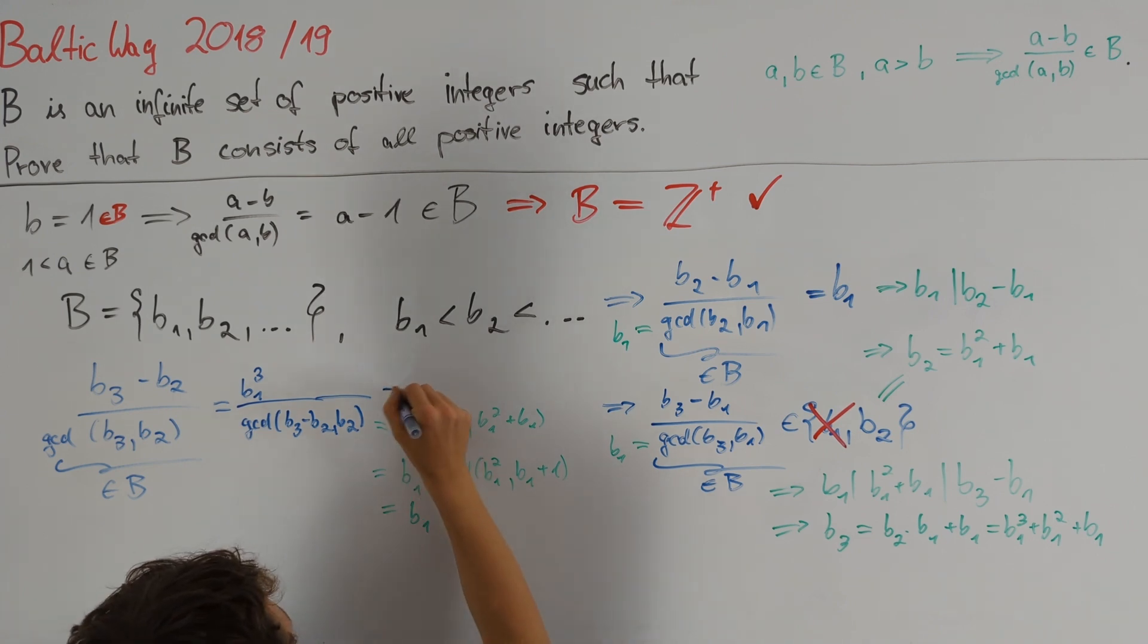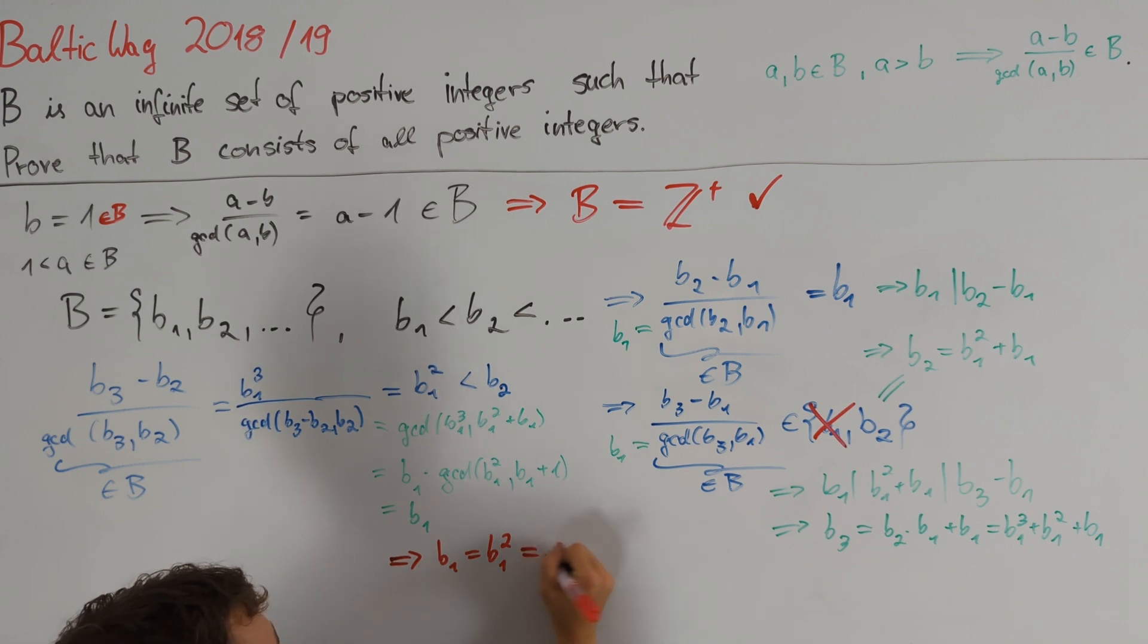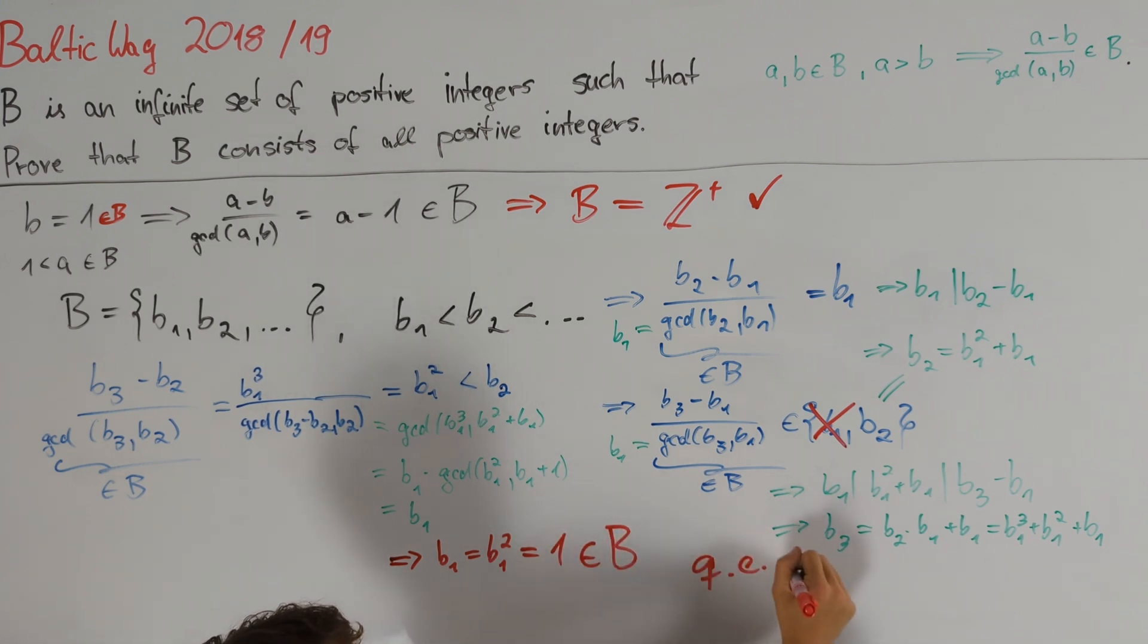b1 squared is strictly less than b1 squared plus b1, which equals b2. And so from the fact that b1 squared must be contained in B and that it is strictly smaller than b2, we can conclude that b1 is equal to b1 squared. Since b1 is a positive integer, this already implies b1 is equal to 1, and therefore we have proven 1 is in B as desired and therefore we are done.